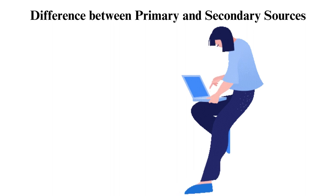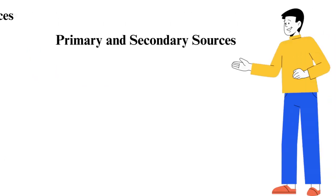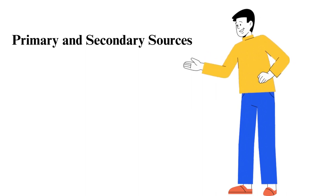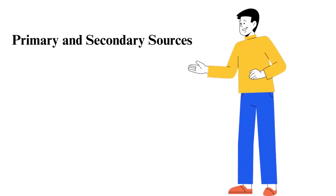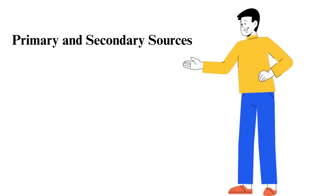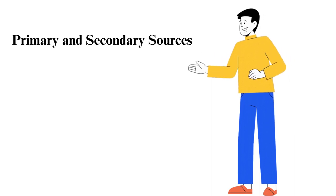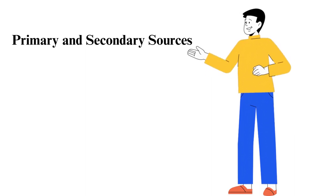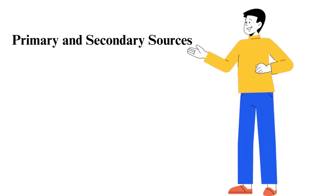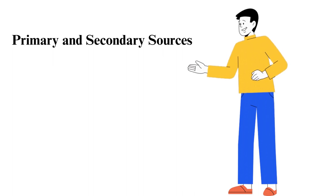Difference between primary and secondary sources. Have you ever encountered these terms before, primary and secondary sources? Do you understand what each one of them means? Primary and secondary sources are the types of information that you use when carrying out research. At some point in life, I'm sure you have done research, whether academic or non-academic.